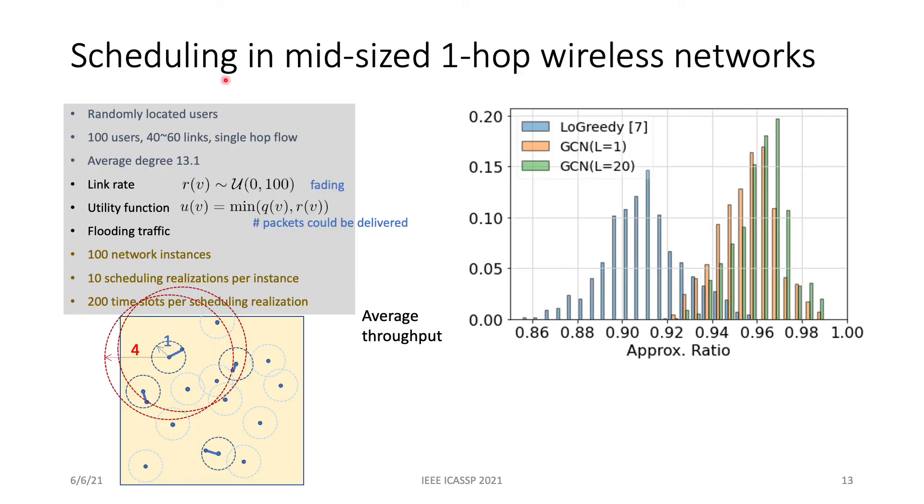Our third experiment is a simulation of scheduling in a middle-sized single-hop wireless network. Here, we will randomly place 100 users in a 2D square area. And then the links and interferences are established based on their physical distance, indicated by the blue and red circles here. The link rate is stochastic to reflect the fading process of the wireless channel. And the utility function represents how many packets can be delivered over that link. We set the traffic rate as the flooding rate and run sufficient iterations and repetitions for the simulation. The average throughput is collected.